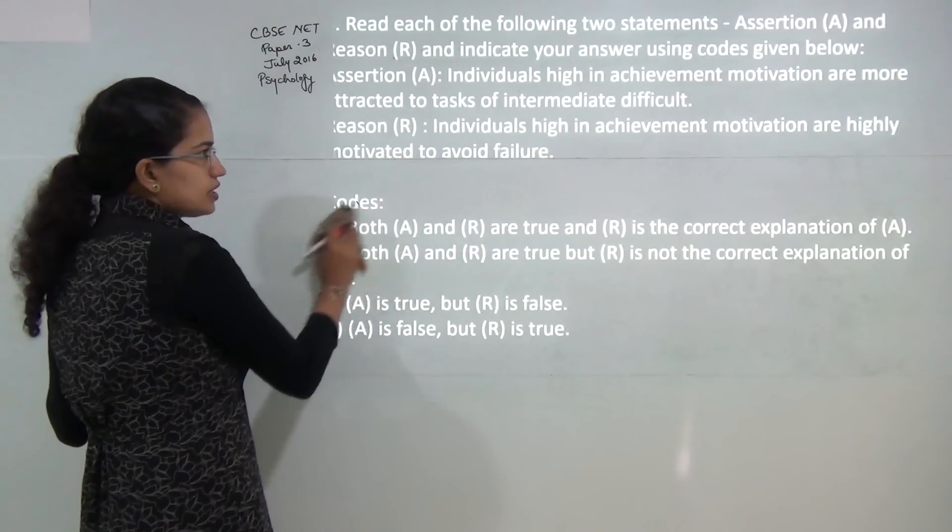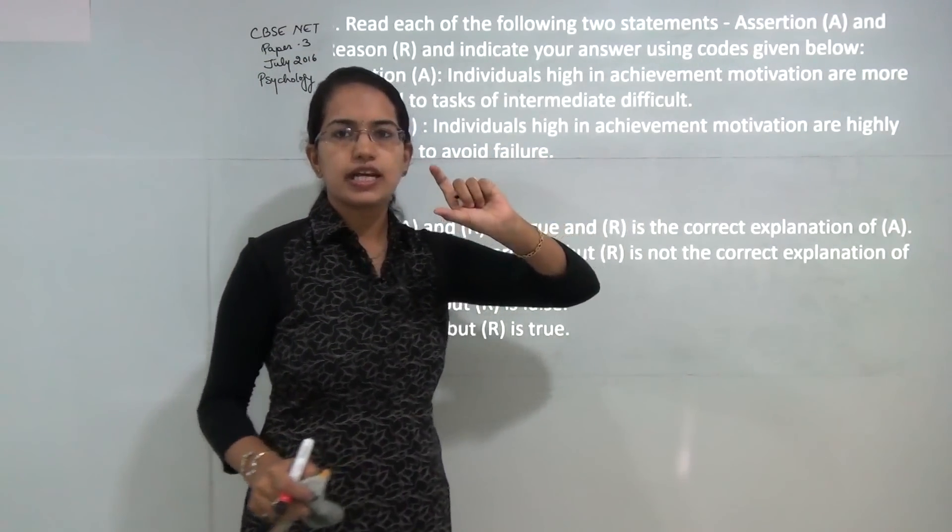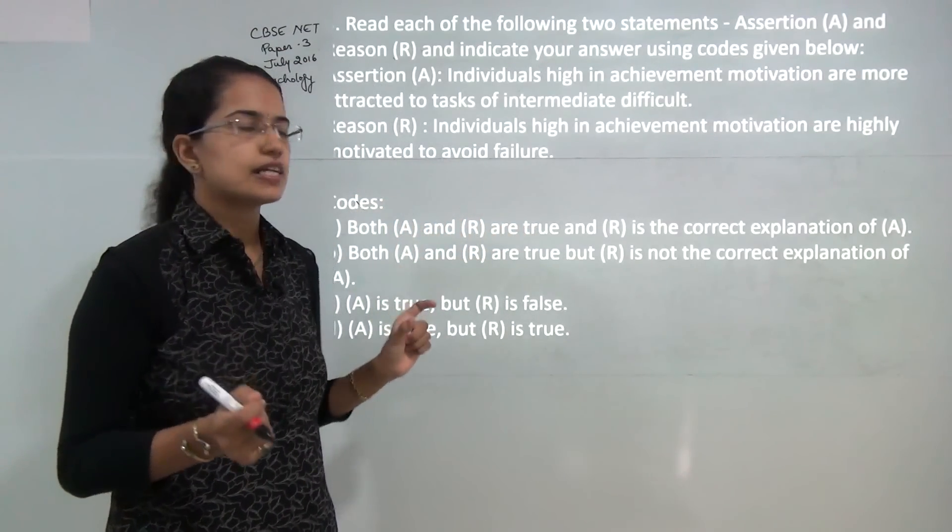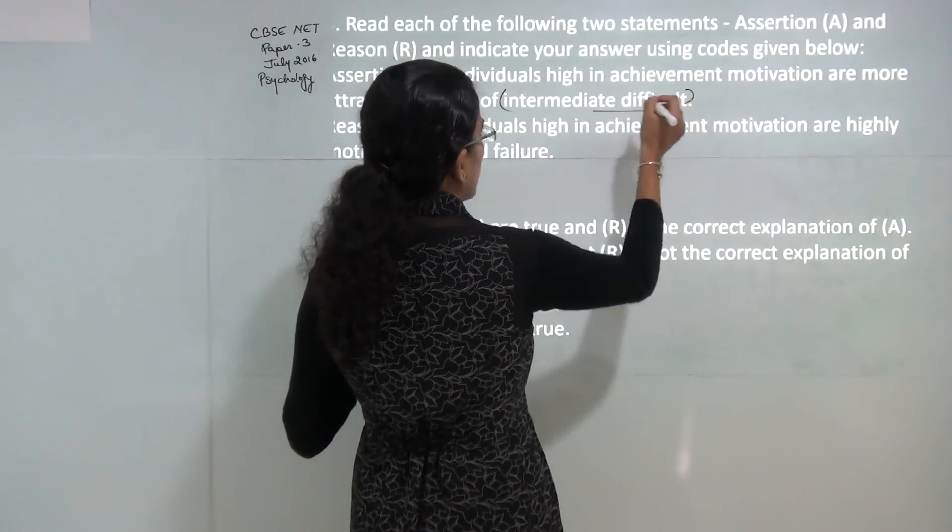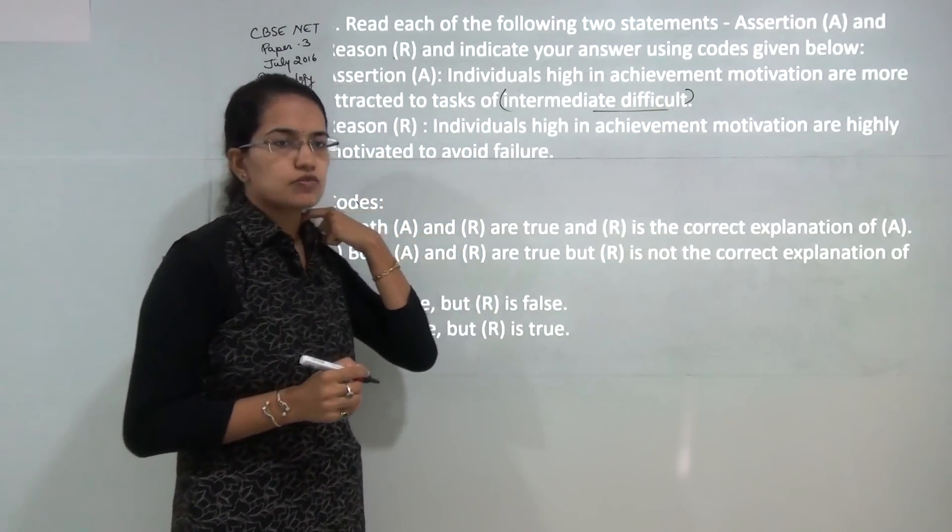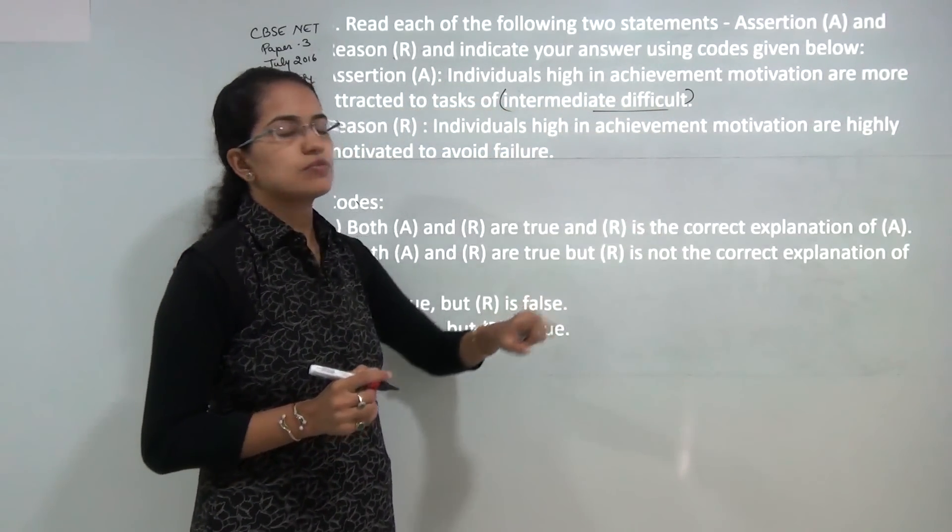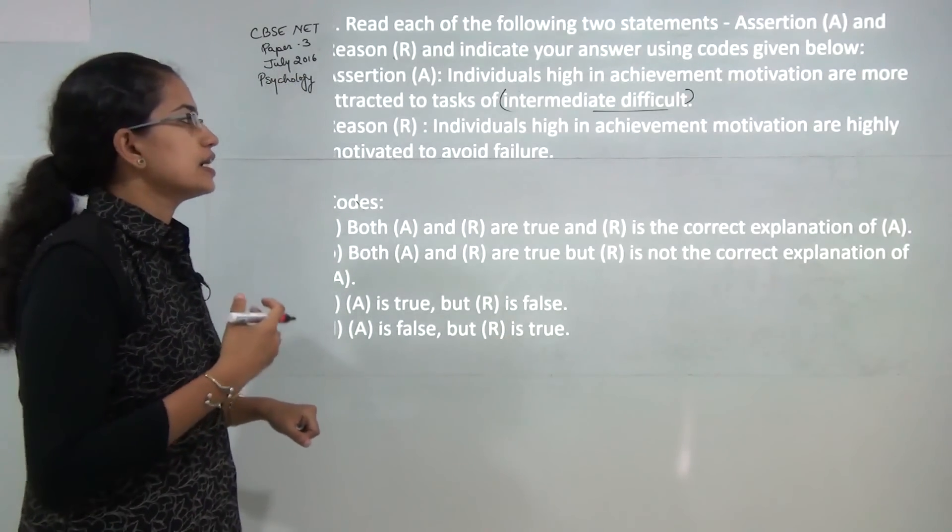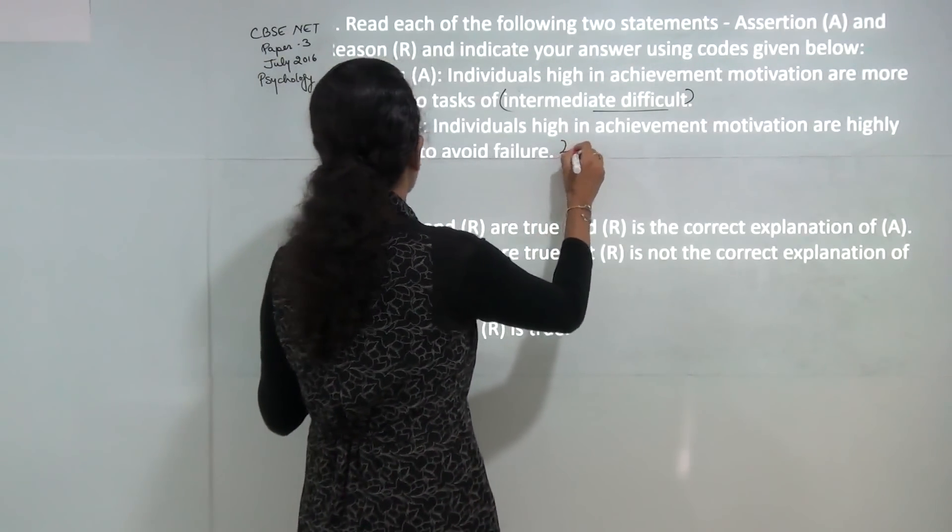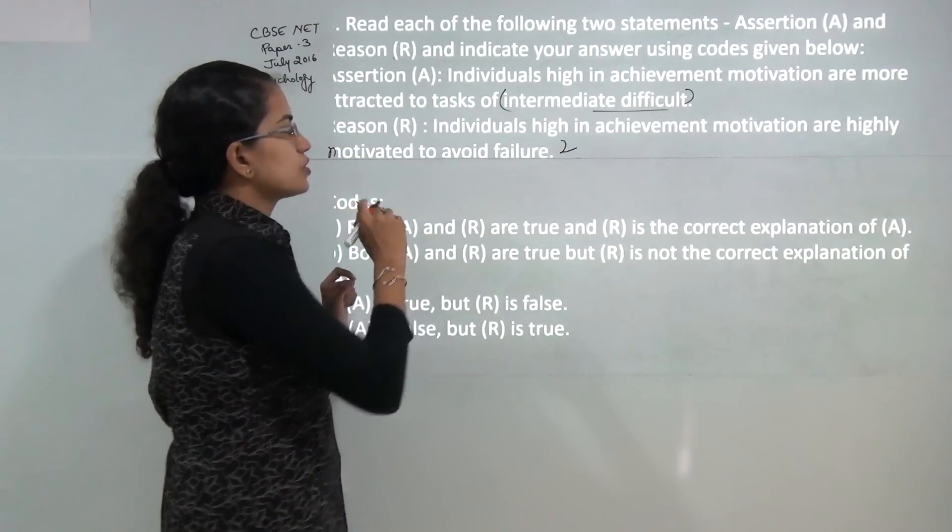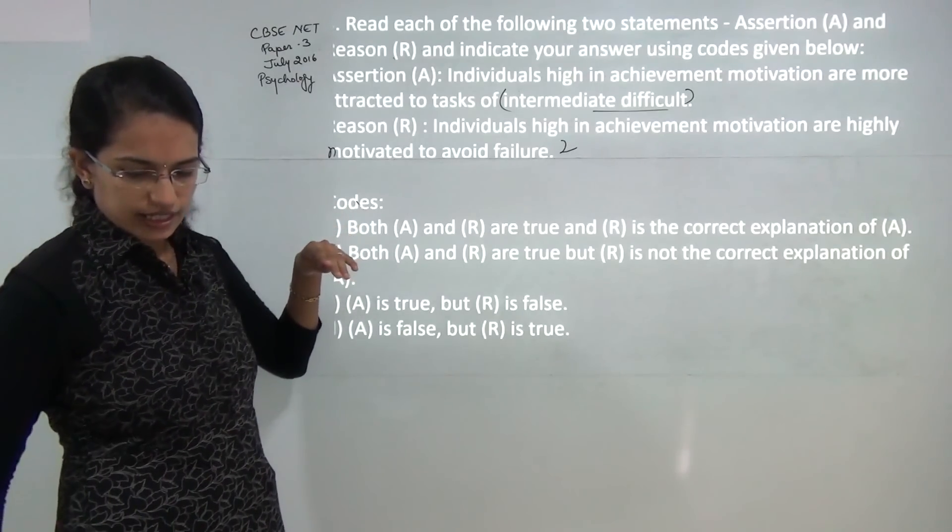Next question: an individual who is high in achievement motivation would take tasks which are intermediately difficult because if the task is very difficult, the probability of not succeeding would be higher. Therefore, an individual who is very high in achievement motivation would prefer only intermediate difficult tasks because they are always motivated to avoid failure. Both are correct and reason explains the assertion correctly.